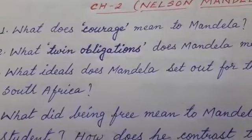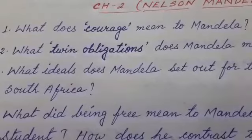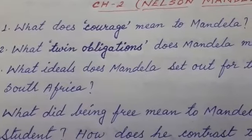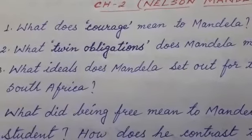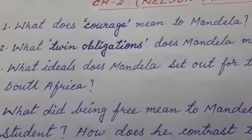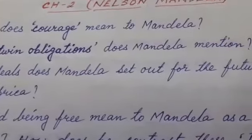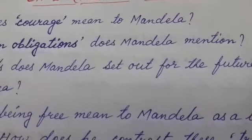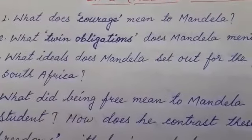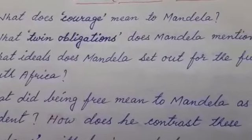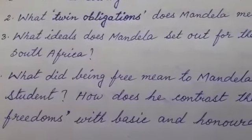Question number two: What 'twin obligations' does Mandela mention? Twin obligations — T-W-I-N O-B-L-I-G-A-T-I-O-N-S — should be in inverted commas.